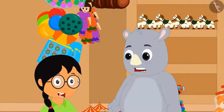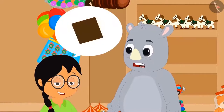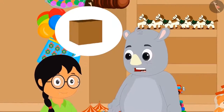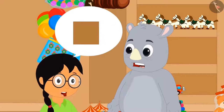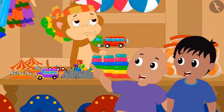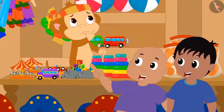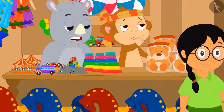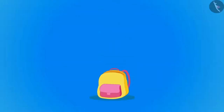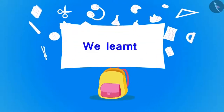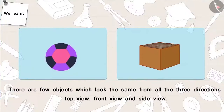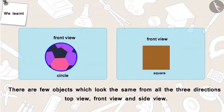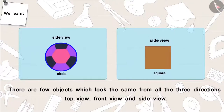There are some objects whose shape from all directions — top view, front view, as well as side view — appear to be the same. Raju and Bablu started cheering happily, and then the three of them went to play together in the park. In this video we learnt that there are a few objects which look the same from all three directions: top view, front view, and side view.